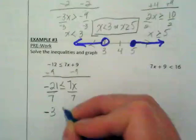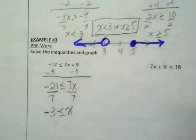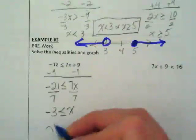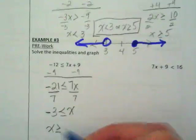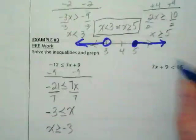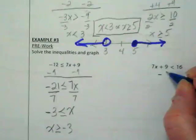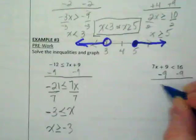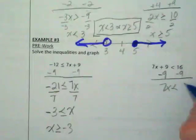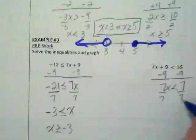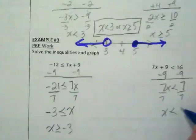So, negative 3 is less than or equal to x. Order matters, so what are we going to do with this? Flip-flop it. And let's start with also subtracting the 9 on the right side. 7x is less than 7. Divide by 7. We get x is less than 1.